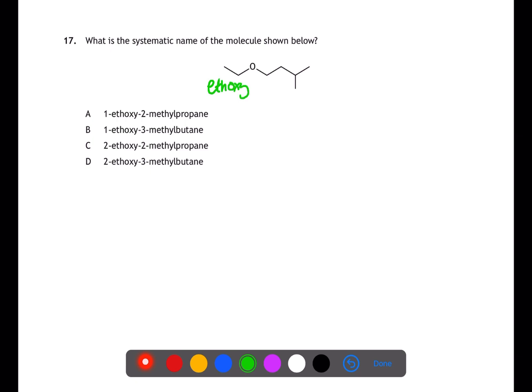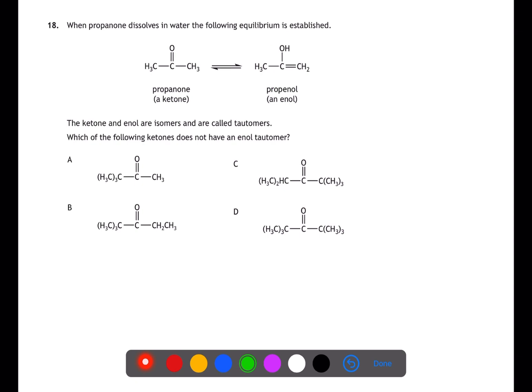For question 17, you're naming an ether. Ethers are named by finding the longest chain hydrocarbon and naming it, then adding the alkoxy part as if it's a branch. Here we have an ethoxy group. The longer chain hydrocarbon part is named as if the ethoxy part is joined at the start, making it 3-methylbutane. The ethoxy is joined on at carbon number one, making B the answer.